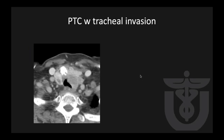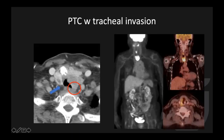Here is another case of papillary thyroid cancer with tracheal invasion. Notice the deformity of the tracheal wall. Normal TE groove shows nice fat, but on this side the fat is completely obliterated — there is no distinction between the lateral wall of the cervical esophagus and the tumor. This explains the PET finding of abnormal uptake within the right true vocal cord because the right true vocal cord is doing all the work — the left side is completely paralyzed.